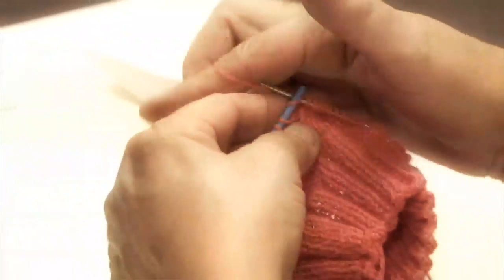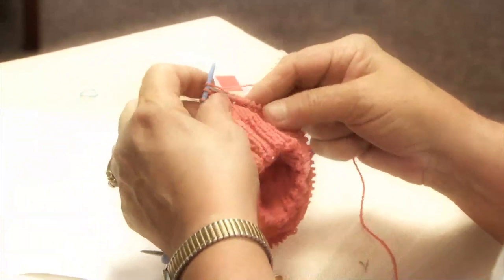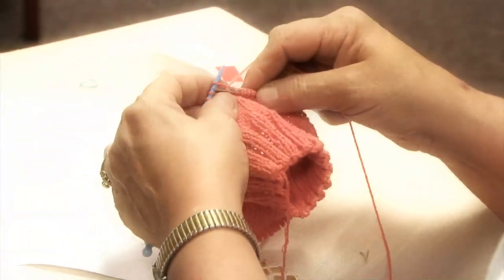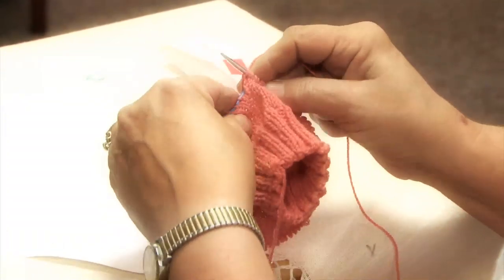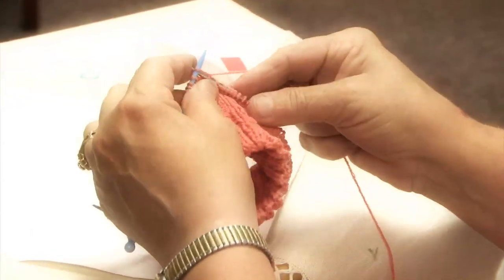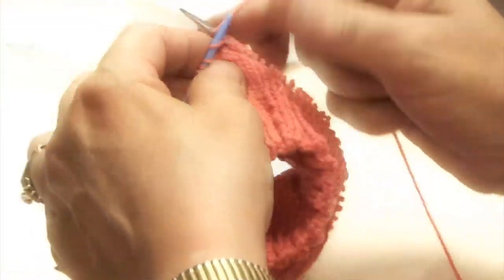There we go. So we're picking up the stitches and we're putting them all back on our 9 inch circular needle and we'll have all of our stock stitches back together again and we'll be getting ready to do the gusset decrease.